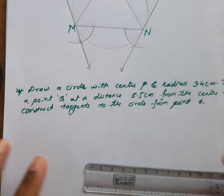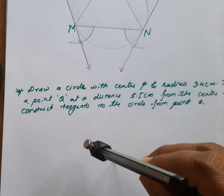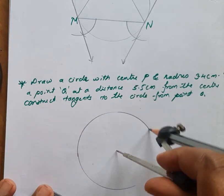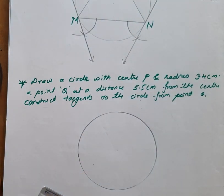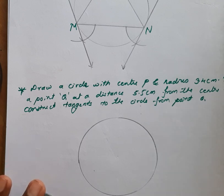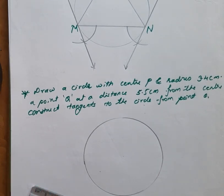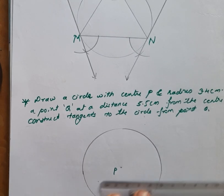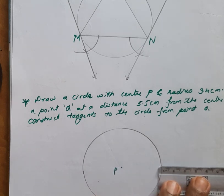This is the same measure — 3.4 centimeters — we will draw the circle of 3.4 centimeters. In the above question, without using the center we drew the two tangents using the chord. Now in this question, take point Q at a distance of 5.5 centimeters. I will name this point as P.